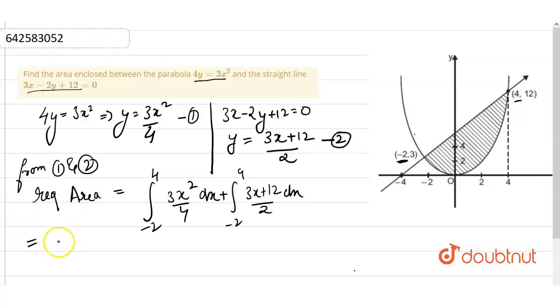Just solving this equation together: 3x squared by 4 plus 3x plus 12 by 2 dx. By putting the values, we get 12 plus 24 minus 16, and the other one is 3 minus 12 plus 2.